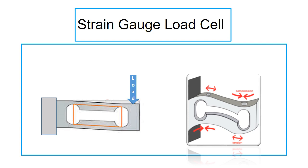When a load is applied, the body of the load cell is slightly deformed due to the load applied. The body of the load cell always returns to its original shape when the load is removed.